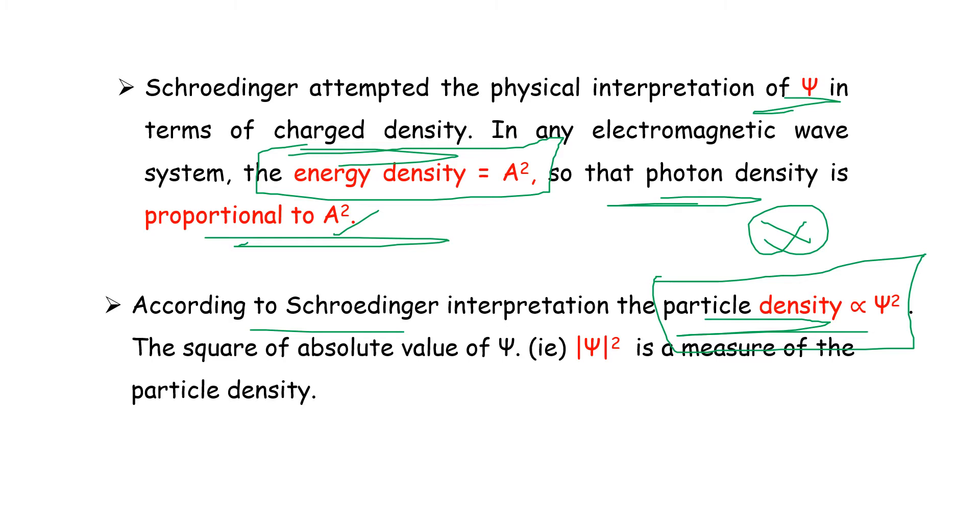The square of the absolute value of ψ, that is |ψ|², is a measure of the particle density.